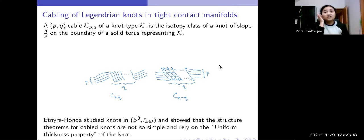Etnyre and Honda studied knots in S³ with the standard contact structure and showed that the structure theorems for cabled knots are not so simple and rely on the uniform thickness property. And this uniform thickness property is a very specific property for knots in tight contact manifolds.